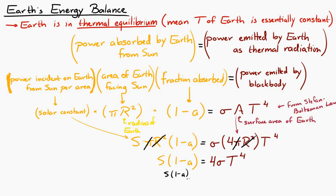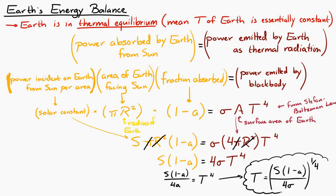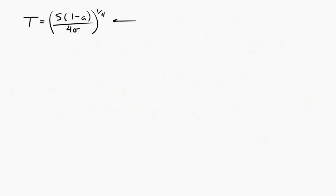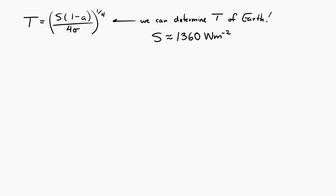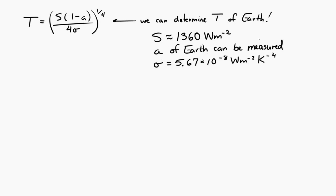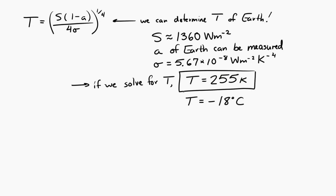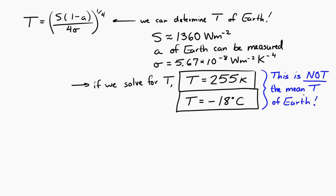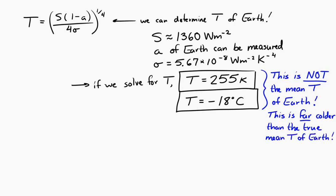Solving for temperature, T equals the fourth root of the solar constant times (1 minus the albedo of the Earth) divided by 4σ. Using this expression, with the solar constant of about 1360 watts per square meter from the data booklet, a good estimate of Earth's albedo, and σ as a constant, we find the temperature of the Earth equals 255 Kelvin, or about negative 18 degrees Celsius. But wait — that's not right. The average temperature of the Earth is not negative 18 degrees Celsius. That's far too cold.